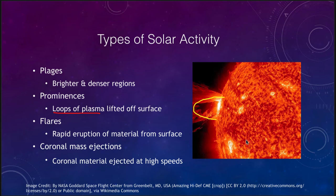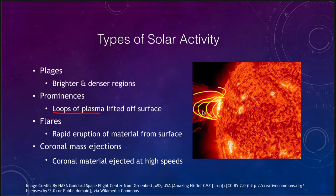Prominences are associated with sunspots — you can imagine the magnetic field lifting up off the surface and pushing material up into the solar atmosphere. When it does that, it does not necessarily throw the material off the sun. The material comes up and then essentially rains back down onto the sun, falling back to the surface and never leaving the sun itself.